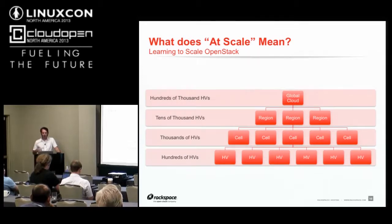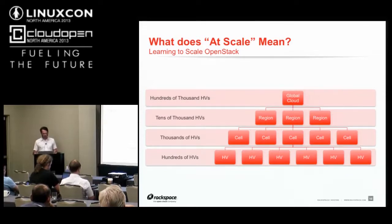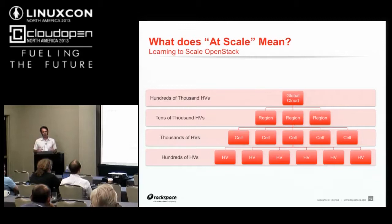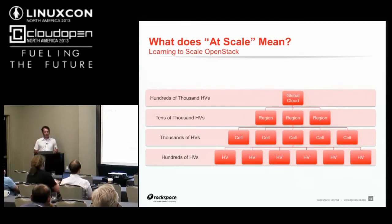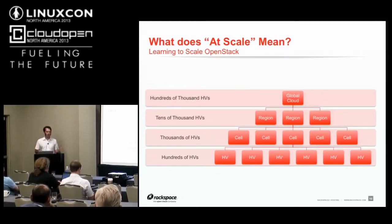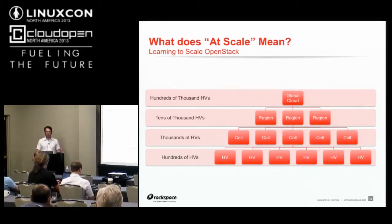We break things down to the region, then the cell, then the individual hypervisor. We deploy in chunks of hundreds and thousands of individual hypervisors, which gave birth to the cell concept. We've been running this internally and brought it into the OpenStack community as a way to manage clusters of machines. Layer-two network boundaries is really what we designed ours around, though cells can go as wide or small as you want — by cabinet, by hardware class, or whatever.